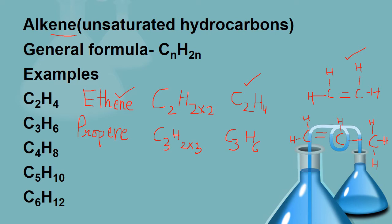Shall we do one more? Now C3 — whenever any hydrocarbon has three carbon atoms, the spelling starts with PROP. And the remaining spelling is decided by the general formula it follows. As it follows the general formula of alkene, it will have ENE. So we call it propene. C is 3, H will be 2 into 3, so the formula becomes C3H6.